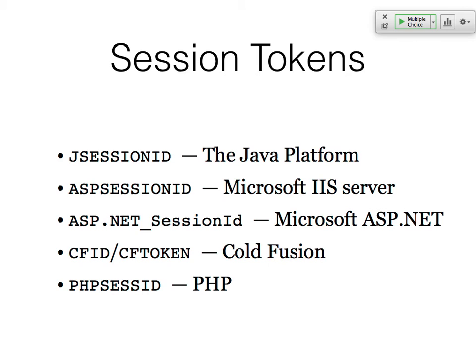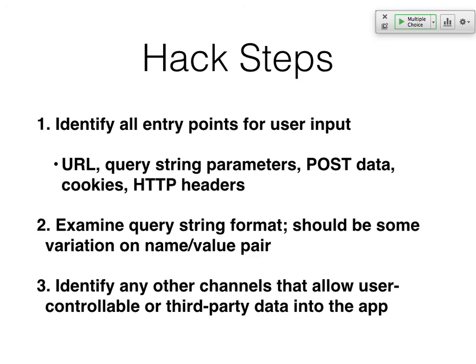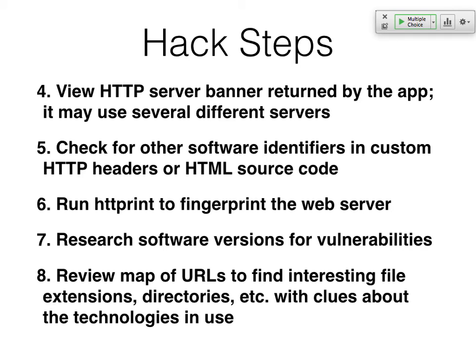Session tokens often tell you the technology — Java sessions, ASP sessions, and PHP sessions put it right in the token, so just looking at cookies and tokens tells you what kind of technology they're using, and these are automatically generated so almost everybody uses the same name. Code reuse is a huge issue: it's much more efficient for developers to reuse somebody else's code, but then you inherit their sloppy coding practices and vulnerabilities. Message boards in particular seem to be a big one — people keep using old crappy message boards and not updating them. Steps to map the attack surface: find entry points for user input, look at the format, find other channels where you control data coming in, then look at the banner to find what they're using, look for other software identifiers, run fingerprinting tools, and look for known vulnerabilities in the software versions.